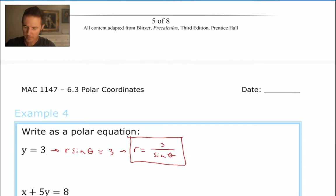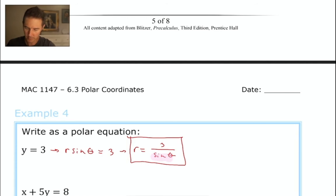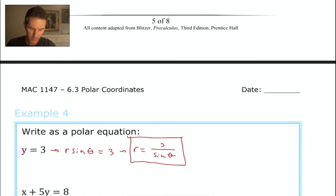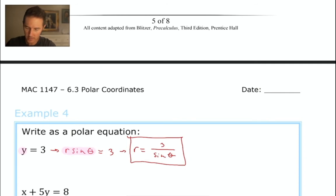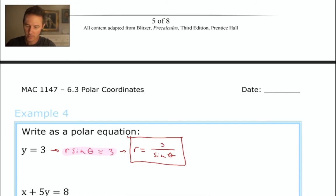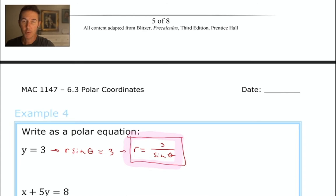This equation, y equals 3, is pretty unassuming and not too difficult to work with. One of the two equations said that y is equal to r sine theta. So I've taken this y value and replaced it with r sine theta. The right-hand side of the equation hasn't changed at all — it's still equal to 3. Now I'm ready for the second step: I can divide both sides by sine theta in order to isolate r on the left-hand side. The result is our final answer: r equals 3 divided by sine theta.